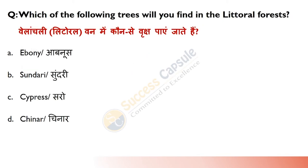Which of the following trees will you find in the littoral forest, also called tidal forest? The Sundri tree is an important tree found in tidal forests. It grows in coastal areas where there are salt marshes, tidal creeks and estuaries.